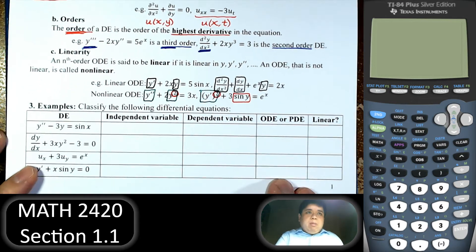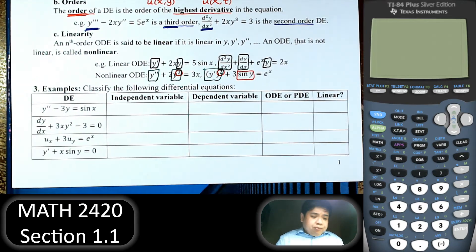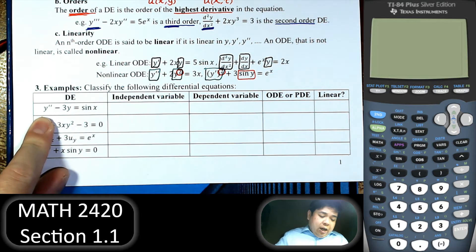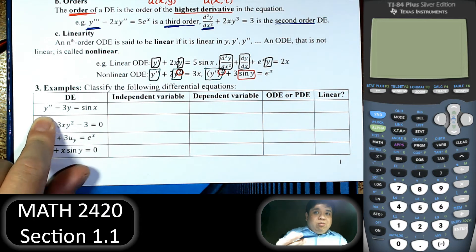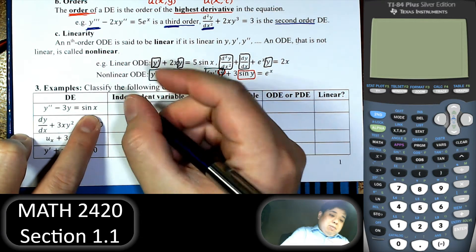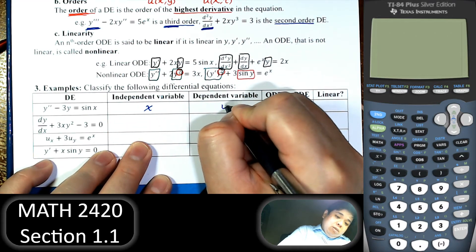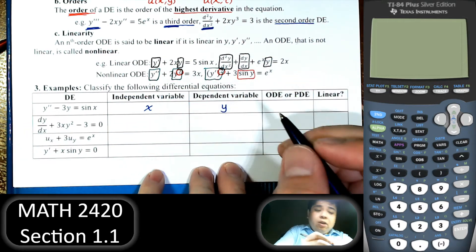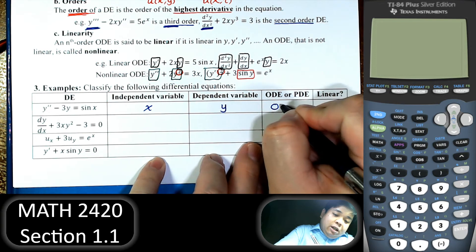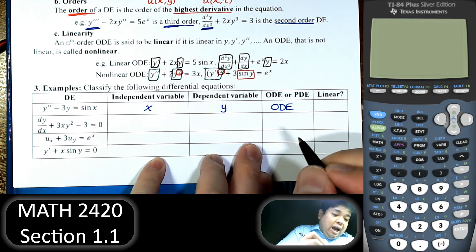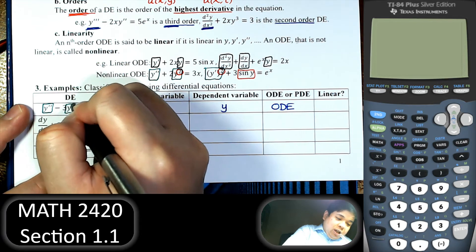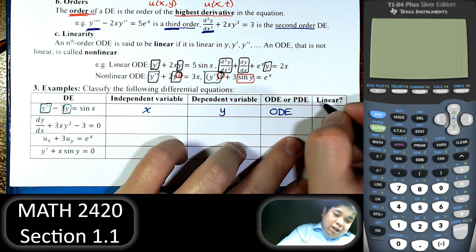Let's apply this classification to examples. Classify the following differential equation. For this equation, we see y prime and y double prime, meaning y is the dependent variable and x is the independent variable. There is no partial derivative and only one independent variable, so this is an ordinary differential equation. Looking at linearity: y double prime and y are both to the first power, so it is linear. And because the highest derivative is second order, this is order 2.